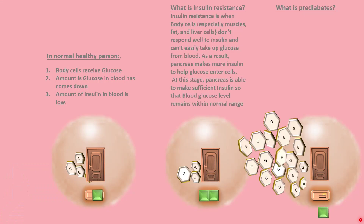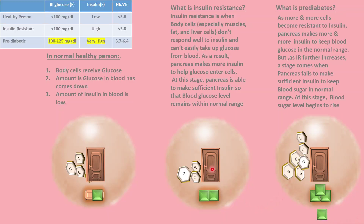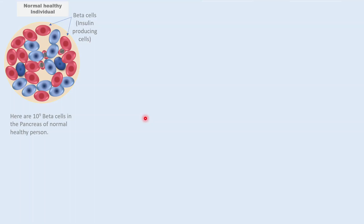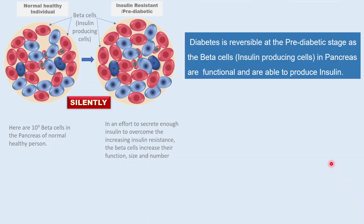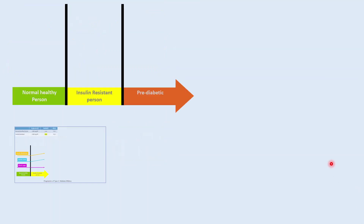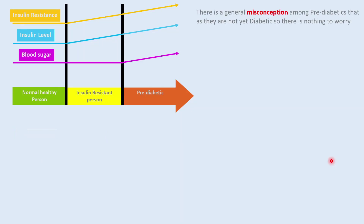In the pre-diabetic stage, the pancreas makes insulin but there is no response. The pancreas makes more insulin — still there is no response. The pancreas continues to make insulin but fails to make sufficient insulin to keep the blood sugar in the normal range. Blood sugar level begins to rise but is not high enough to be diagnosed as diabetes. There are more than a million beta cells in the pancreas of a normal, healthy person. In an effort to secrete enough insulin to overcome increasing insulin resistance, the beta cells increase in number, size, and function. Diabetes is reversible at this stage, as beta cells are functional and are producing insulin. The insulin level is high and the blood sugar is high. This is a general misconception with pre-diabetics — that since they are not yet diabetic, there is nothing to worry about.